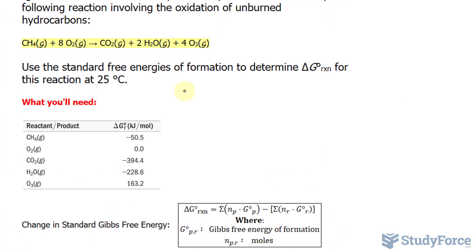We'll start by writing delta G of the reaction equals the sum of the amount of moles of each molecule times its standard free energy. For the products, we'll start with CO2. The equation is already balanced. We have one molecule of CO2, so one mole times, according to this table, negative 394.4 kilojoules per mole.